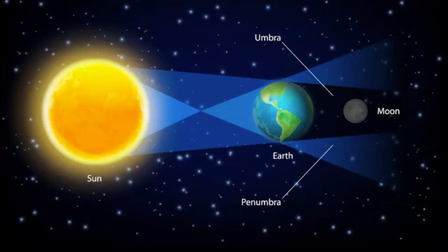If we take a look at a diagram of a lunar eclipse, we can see that the moon is passing through the Earth's shadow, and there's two different parts to Earth's shadow. You have the umbra, which is the darker portion, and then the penumbra as well.